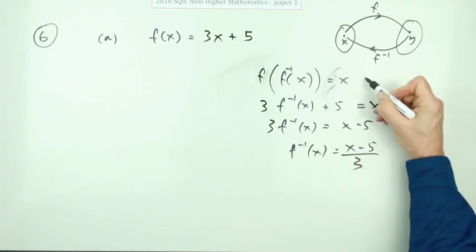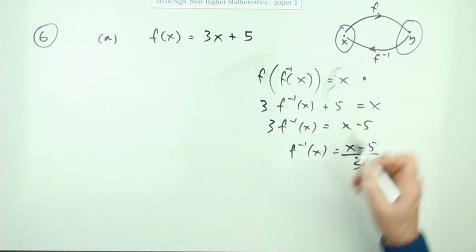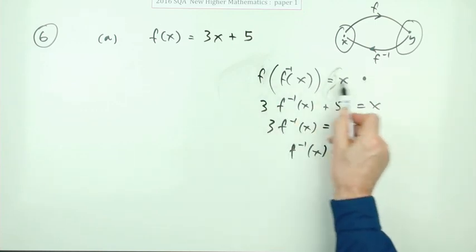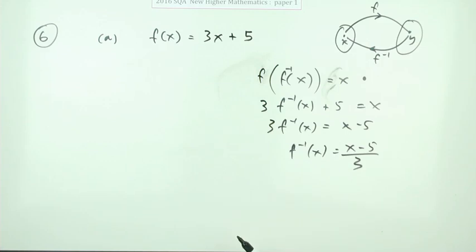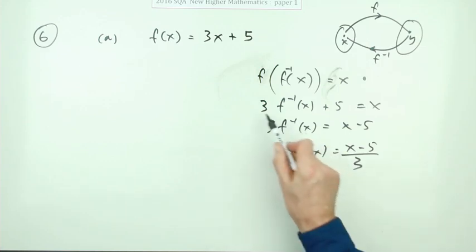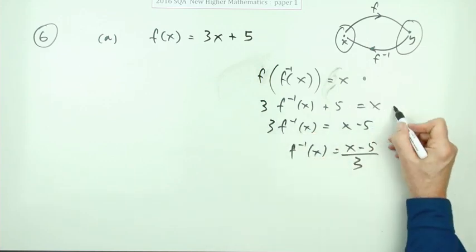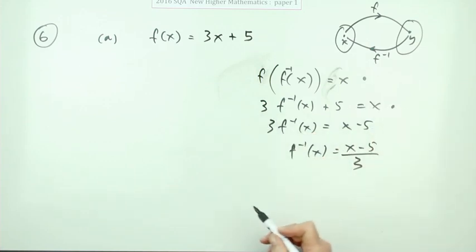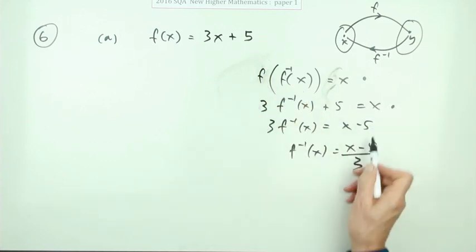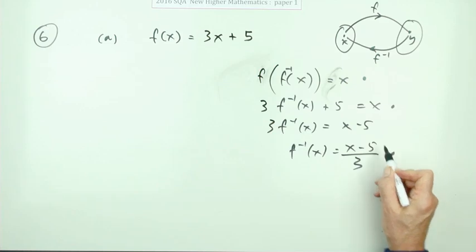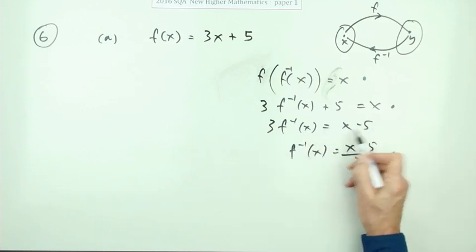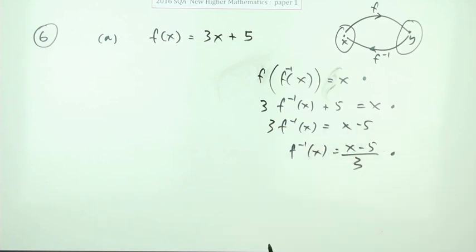Using this method, the first mark is for the sophisticated composition statement f(f⁻¹(x)) = x, the second mark is for showing what the function does to f⁻¹(x), and the third mark is for rearranging to get the final answer.